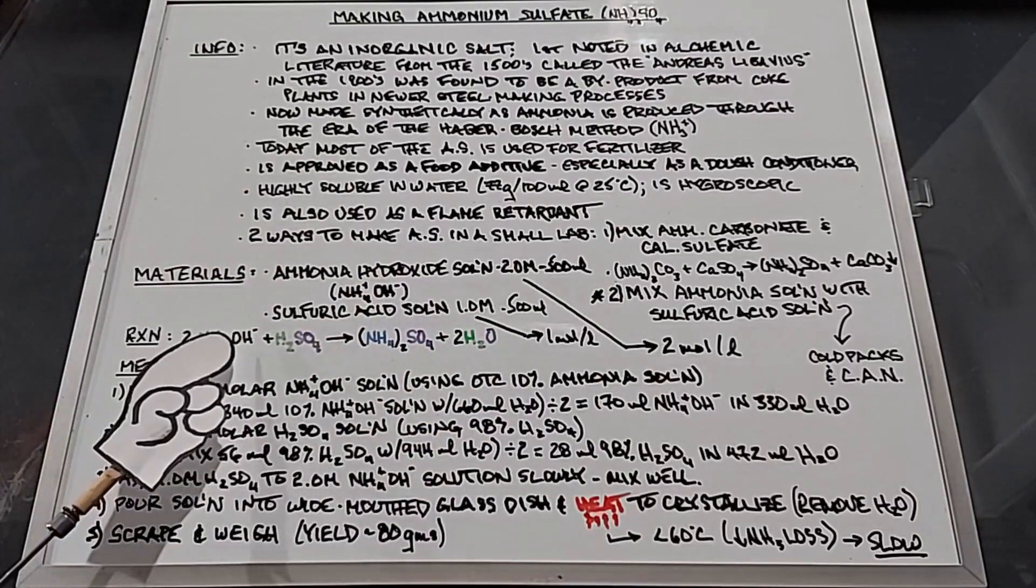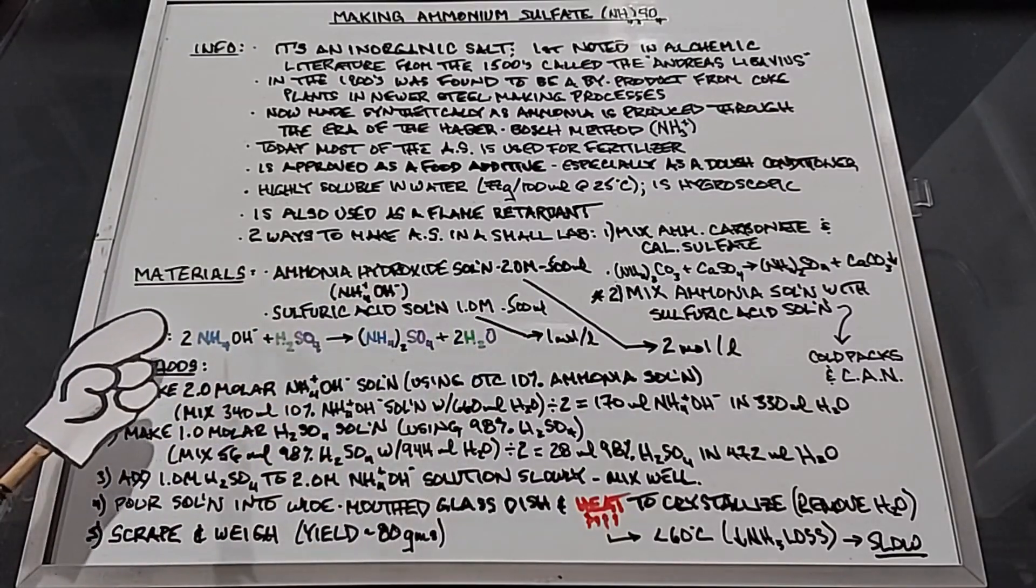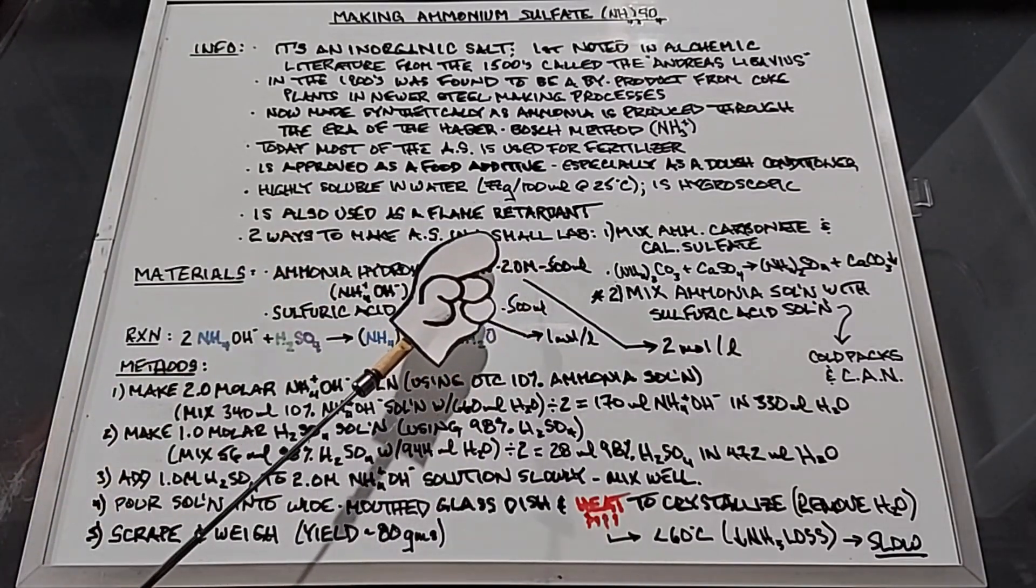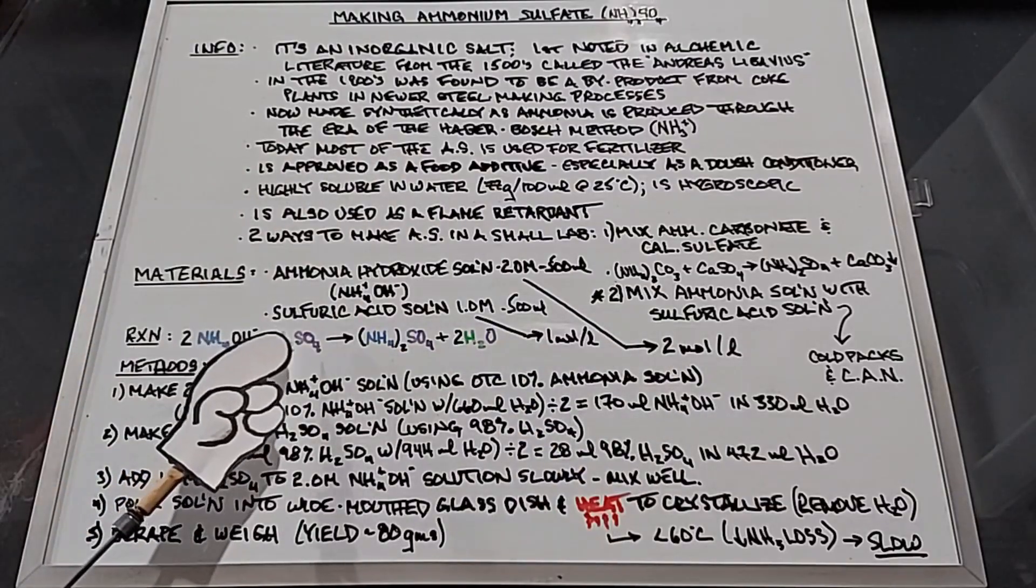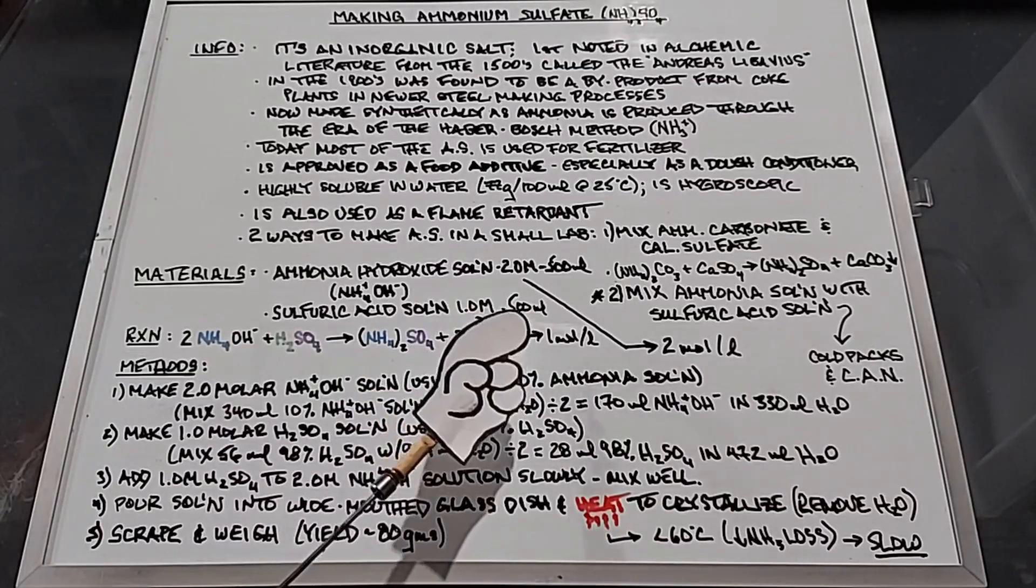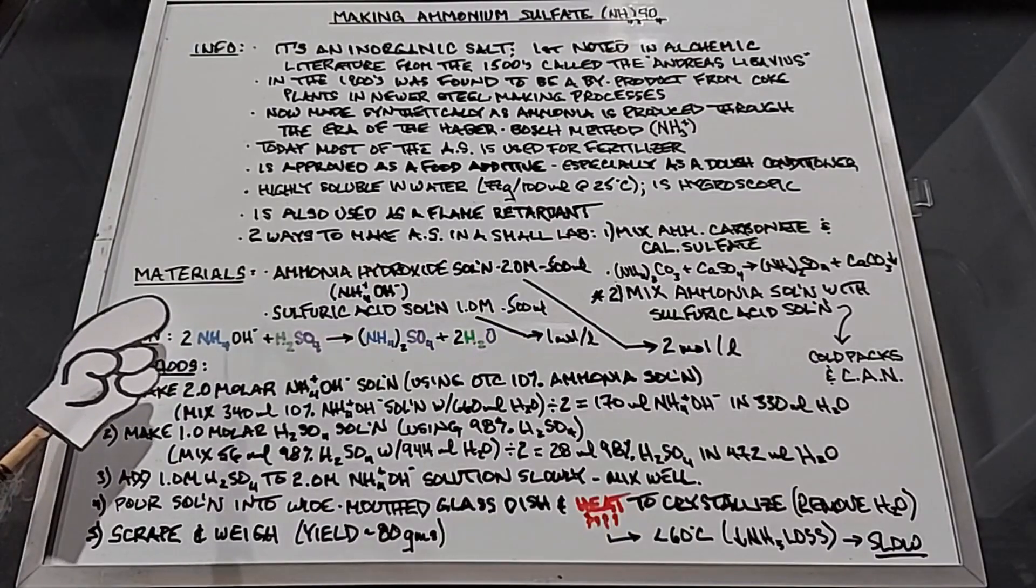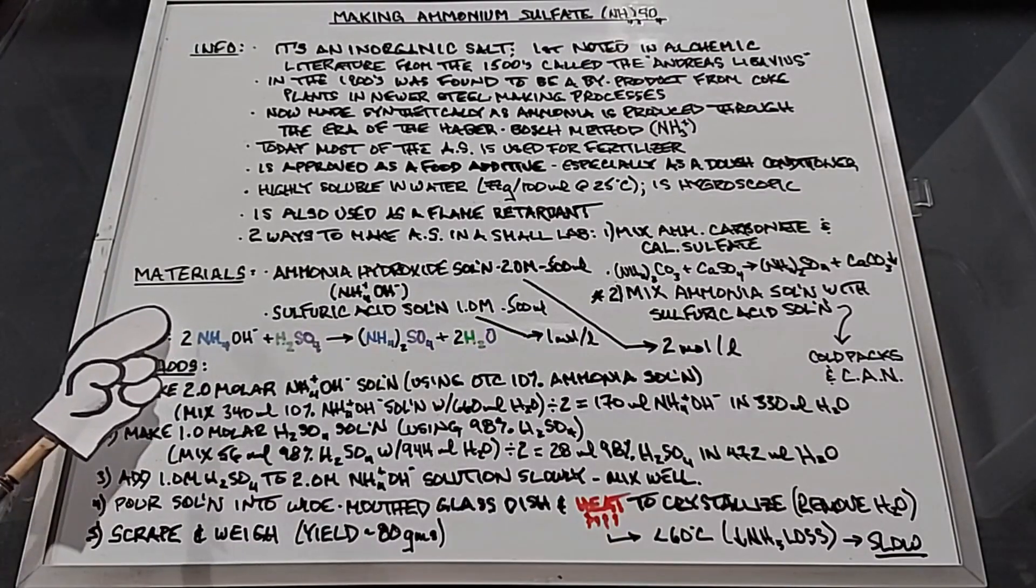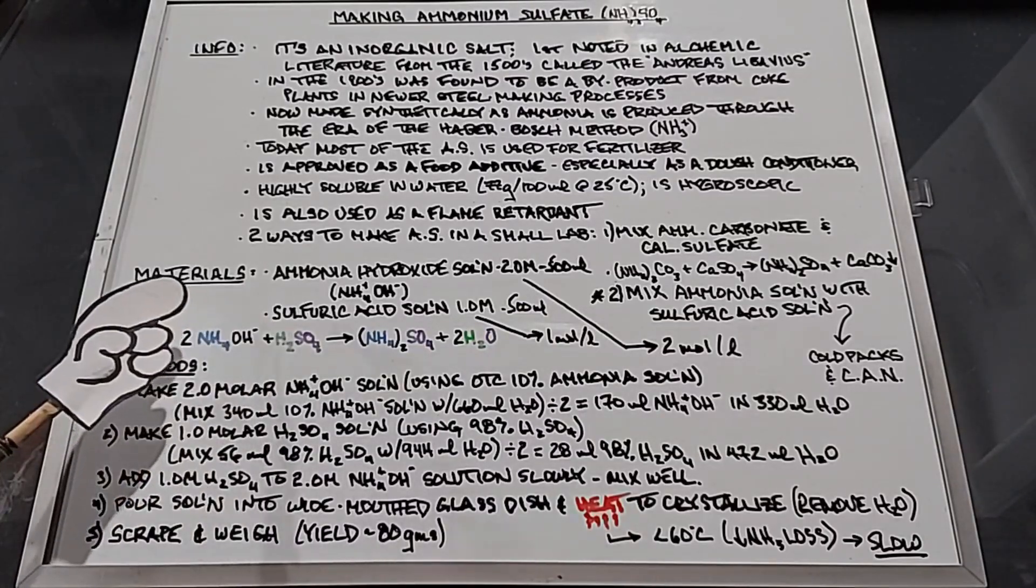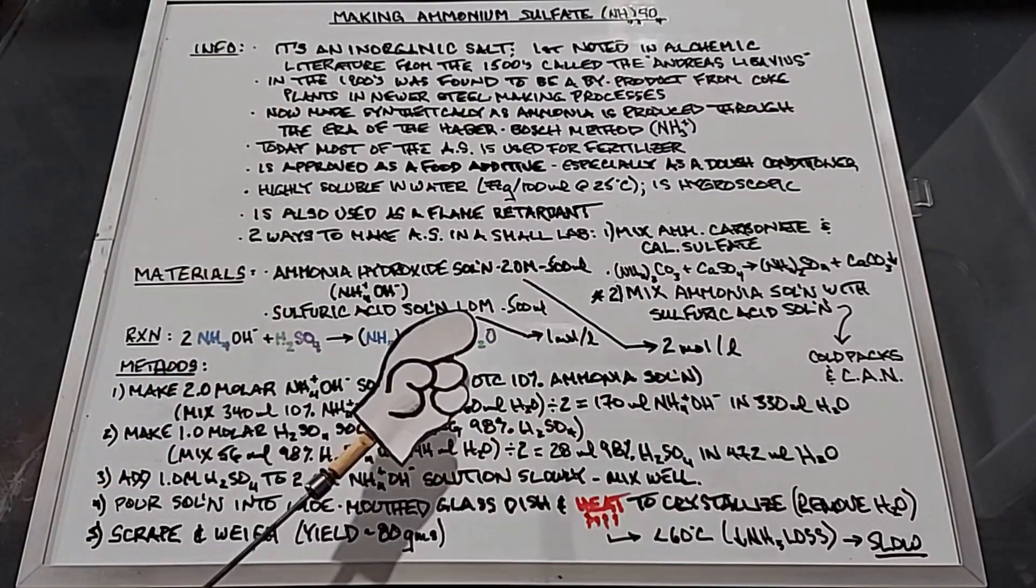Because of the equation here we have two moles of the ammonia hydroxide solution plus one mole of sulfuric acid. The equation shows us a two molar solution of ammonia hydroxide which is two moles per liter, and then one mole of the sulfuric acid solution. Now you can use different amounts as long as you have two of the ammonia hydroxide solution and one of the sulfuric acid solution.